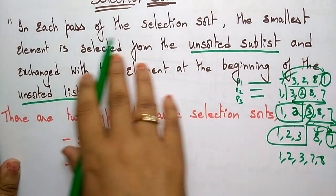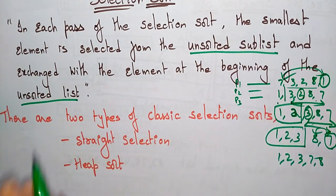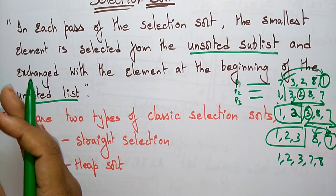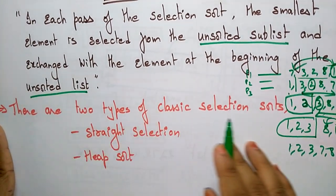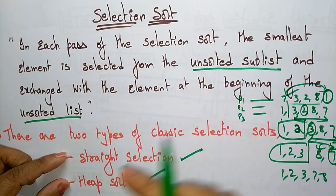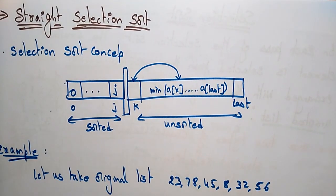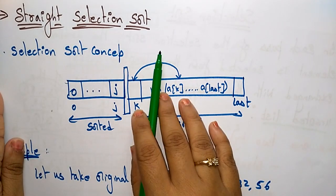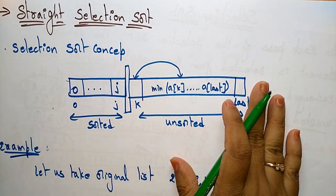Let me explain the definition again. In each pass of the selection sort, the smallest element is selected. First you select the smallest element from the unsorted sublist and exchange with the element at the beginning — because we have to arrange the numbers in ascending order. The smallest element has to come first. There are two types of classic selection sorts: stride selection and heap sort. In this video I am going to explain about the stride selection sort.